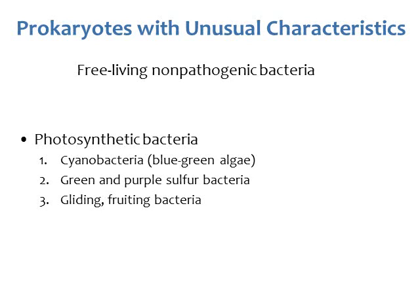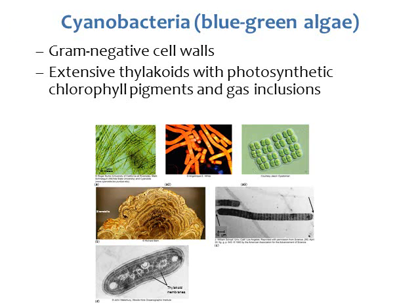One type of bacteria with unusual characteristics are the photosynthetic bacteria — bacteria that can do photosynthesis, or a type of photosynthesis, where they can actually make their own food. One type is called cyanobacteria, also called blue-green algae, though it's not really algae — it's actually a bacteria.